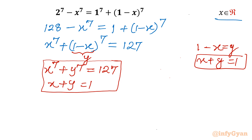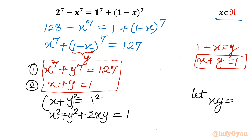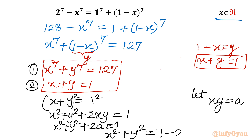I will work with the second equation, x plus y equal to 1. Consider squaring both sides using the (a+b)² formula: x² plus y² plus 2xy equal to 1. Now let xy equal to a, so equations will come in single variable a. We get x² plus y² plus 2a equal to 1.